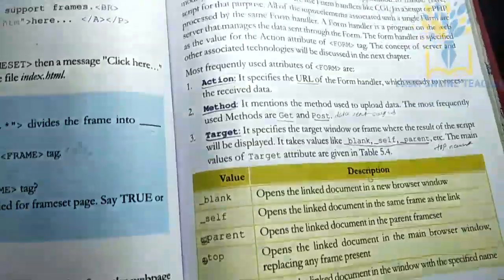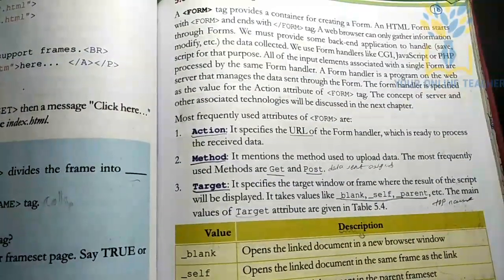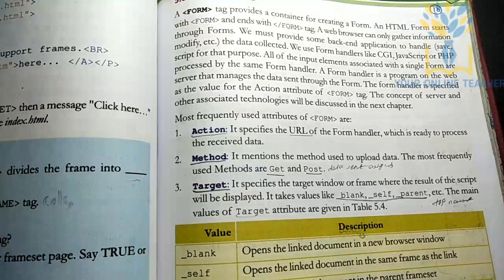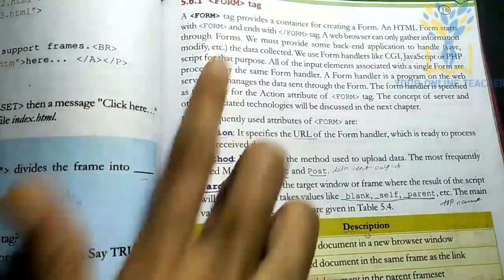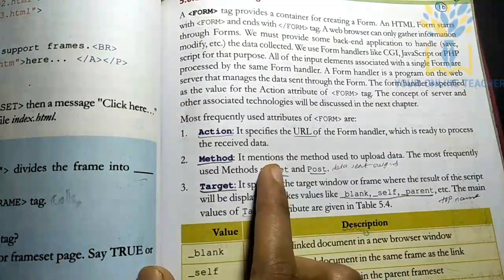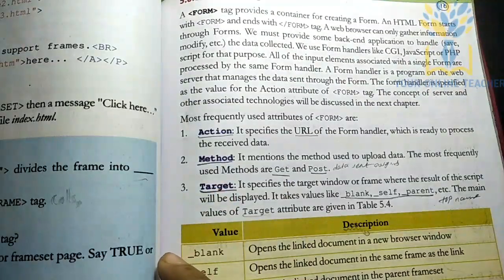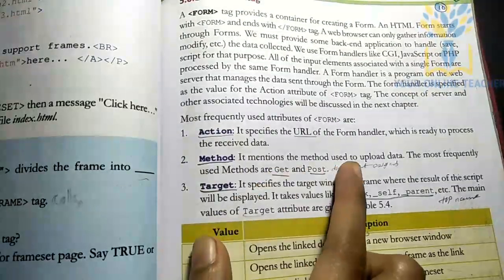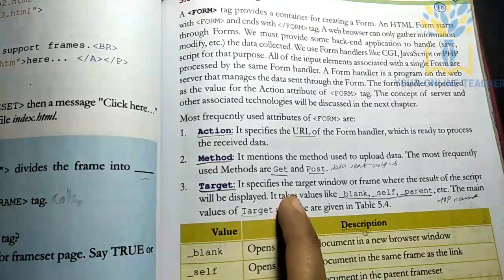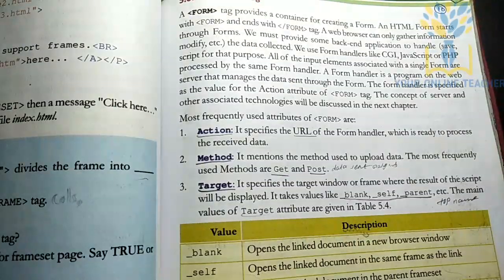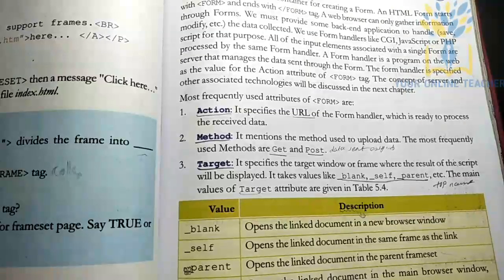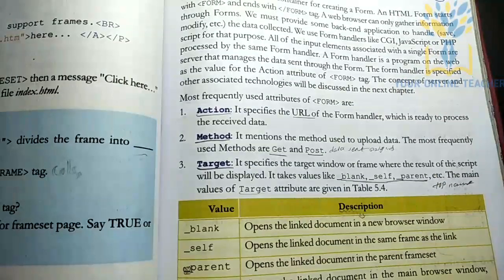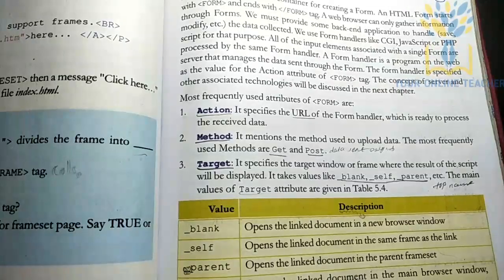The next one is the Form tag. Forms are used with attributes. The main attributes of the form tag are: action — where the form data is sent; method — used to upload or send data; and target — specifying the target window or script where the response will appear.